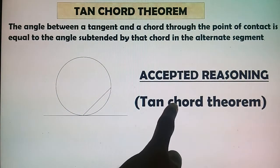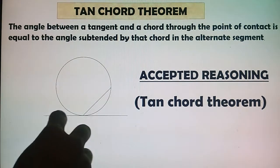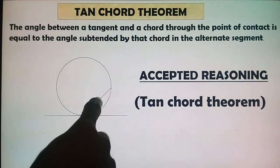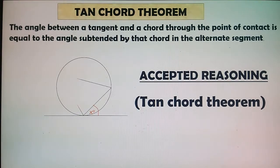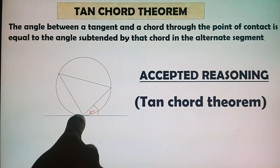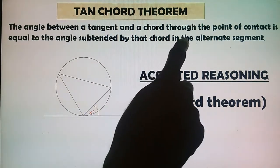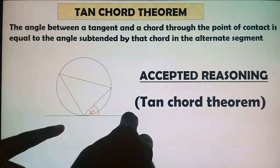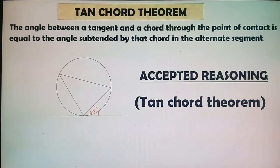The angle between the tangent and the chord — here is our tangent, the line that touches the circle — equals the angle subtended by that chord in the alternate segment. So if you have the angle between the tangent and the chord, that angle equals the angle in the alternate segment. We label this angle x on the diagram.